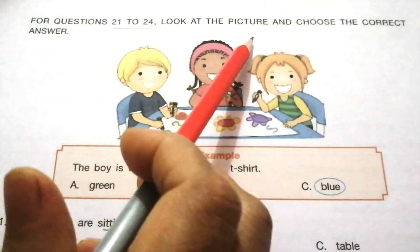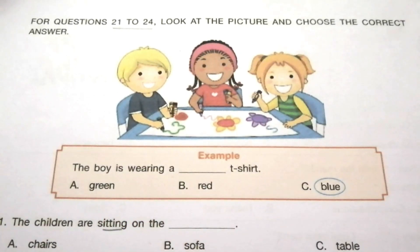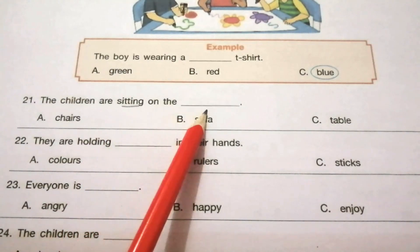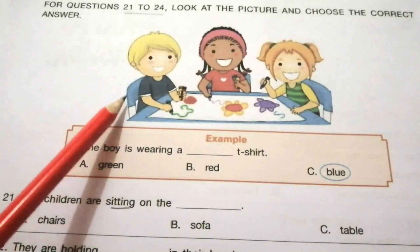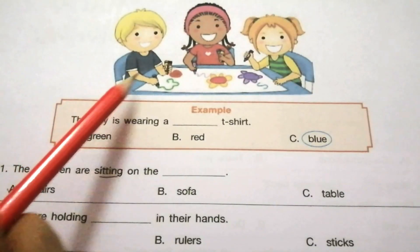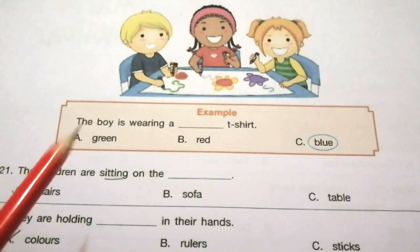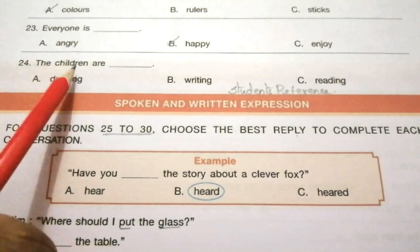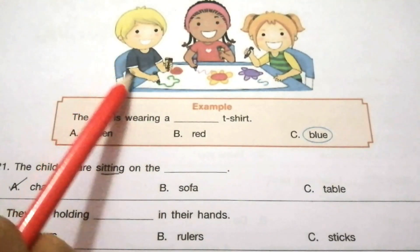For questions 21 to 24, look at the picture and choose the correct answer. Example: the boy is wearing a blue t-shirt. Question 21: the children are sitting on the — chairs, sofa, table. The answer is A — chairs. Question 22: they are holding — colors, rulers, sticks — in their hands. The answer is A — colors. Question 23: everyone is — angry, happy, enjoy. The answer is B — happy. Look at the faces of the children — they are happy. Question 24: the children are — drawing, writing, reading. The answer is A — drawing.